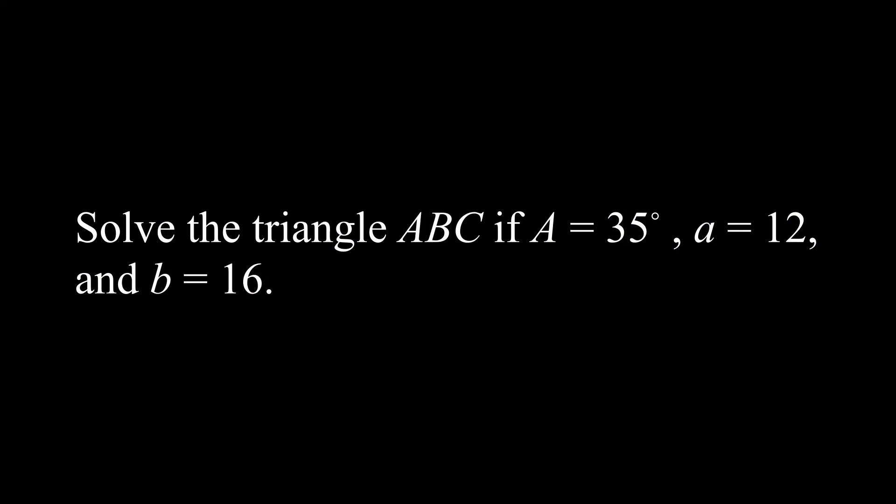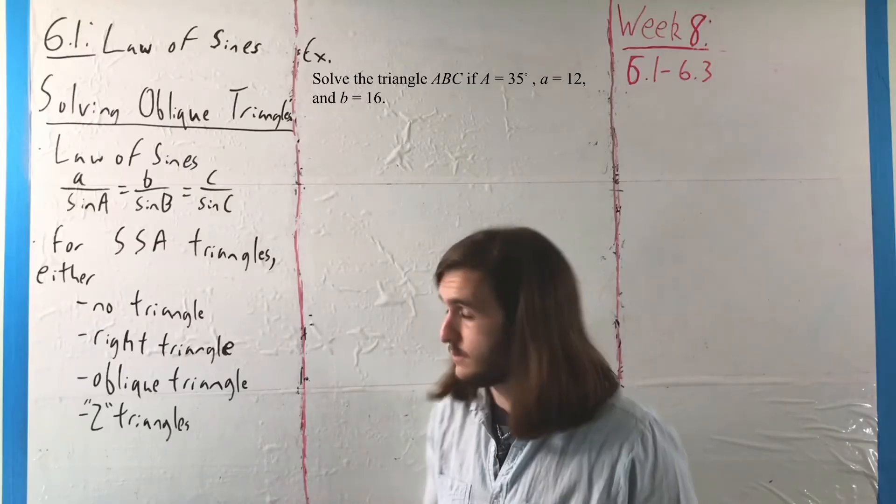And we'll look at another example where we may have something else that happens. In our second case, we want to solve the triangle ABC for A equals 35 degrees, small a equals 12, and small b equals 16. So we're going to start in the same way that we did before.